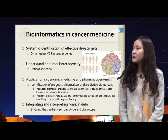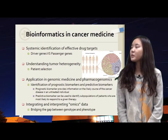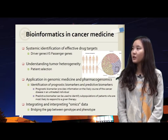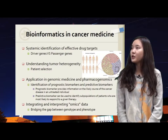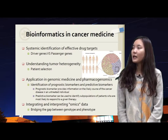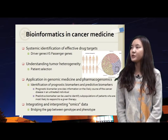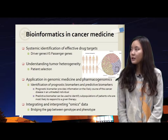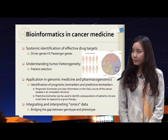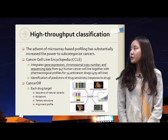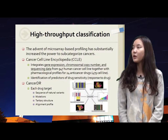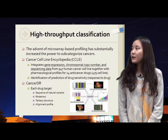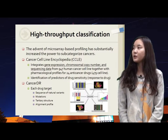Identification of prognostic and predictive biomarkers advances genomic medicine and pharmacogenomics. Prognostic biomarkers provide information on the likely course of cancer disease in an untreated individual. Predictive biomarkers can identify subpopulations of patients most likely to respond to a given therapy. Finally, bioinformatics can bridge the gap between genotype and phenotype. High-throughput screening allows researchers to quickly conduct millions of chemical, genetic, or pharmacological tests, and microarray-based profiling has substantially increased the power to sub-categorize cancers.